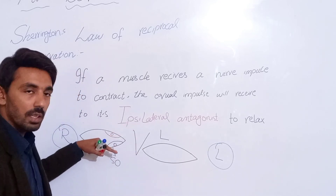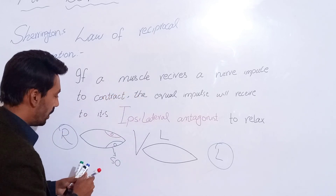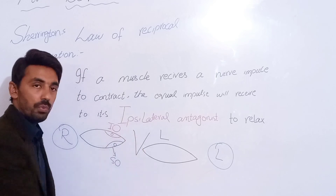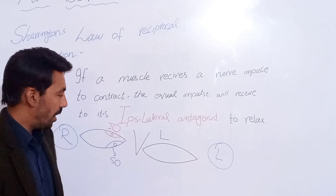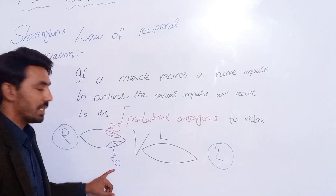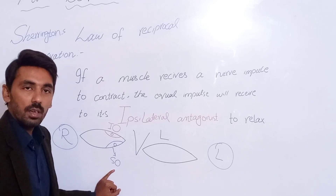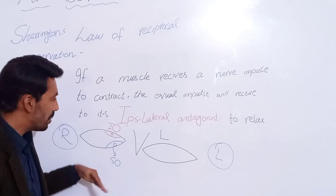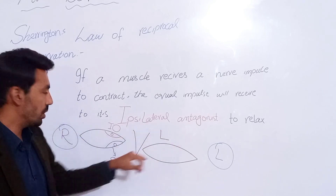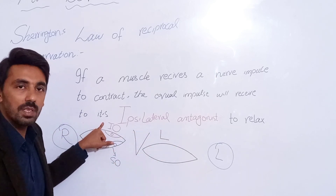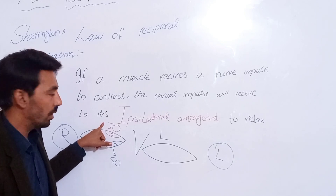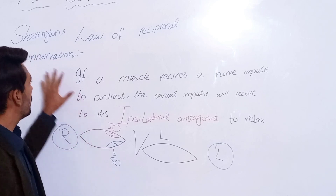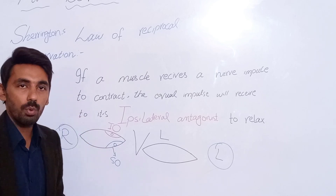The muscle that moves the eye into the upper gaze is the inferior oblique. So if the superior oblique is the primary muscle and receives innervation from the brain to contract, its ipsilateral antagonist — the inferior oblique of the same eye — will receive the same innervation to relax. This is Sherrington's law of reciprocal innervation.